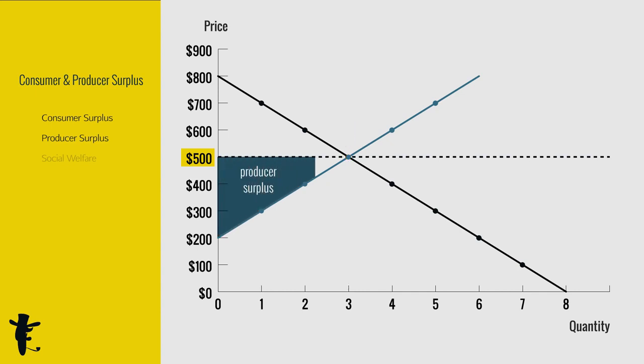Add up all the producer's surplus, and you get a triangle area. Add up these two triangles, we have the total surplus, also known as the social welfare. All of us know that this is the market equilibrium point.